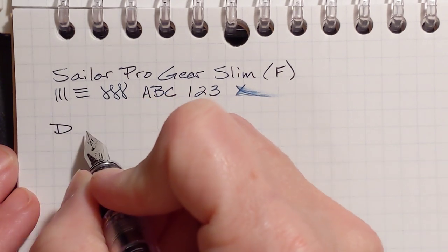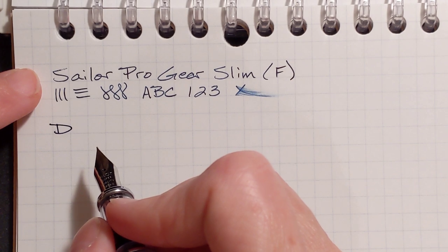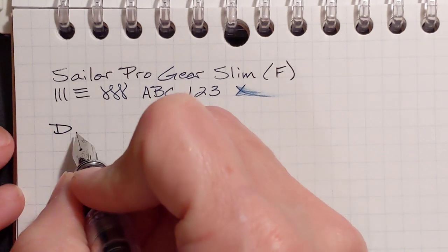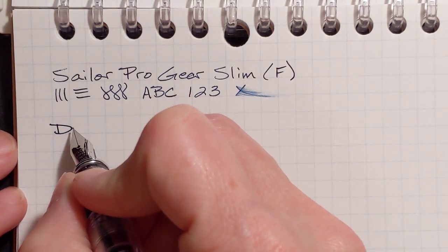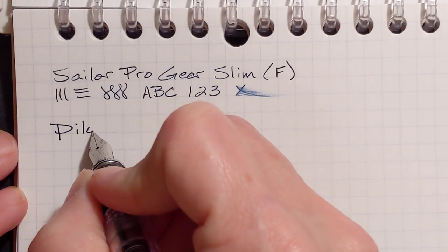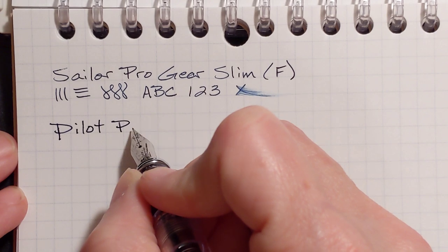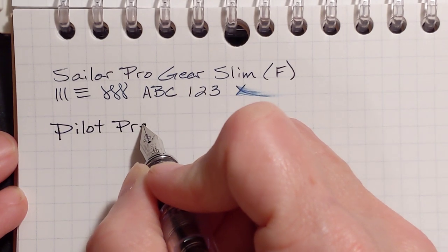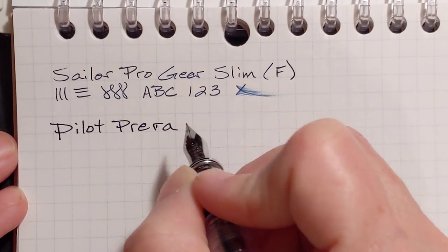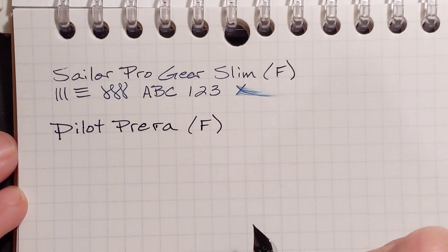And this nib is just so smooth. When I contrast it with the Sailor, the Sailor has that characteristic Sailor feedback, pencil-like feedback. This Pilot nib, it's just very smooth for a fine nib.